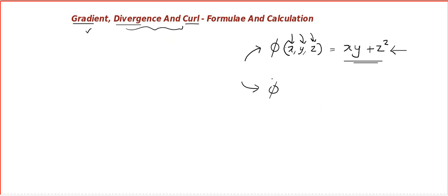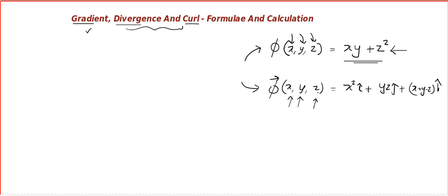Now, suppose we have a vector valued function which depends on three variables. For example, x²·i + y·z·j + (x + y − z)·k. For any three-dimensional coordinate we plug in, we will get a vector value. So this is a vector generating function, or a vector valued function in three variables. The first point to emphasize is that gradient of a function is defined only for scalar valued functions.